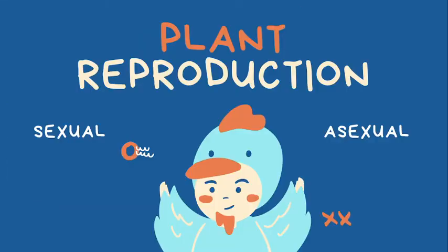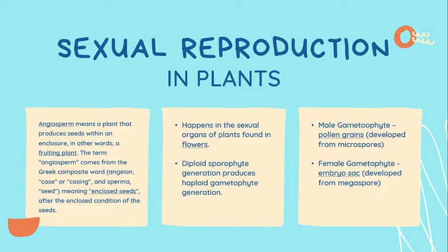Let us consider the plants first. For plant reproduction, we have sexual reproduction. In sexual reproduction, we have the term angiosperm, which means a plant that produces seeds within an enclosure — in other words, a fruiting plant. The term angiosperm comes from the Greek composite word angion, which means case or casing, and sperma, which means seed. Technically, it means enclosed seeds, after the enclosed condition of the seeds.